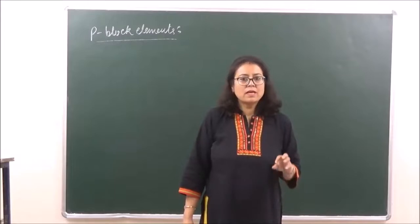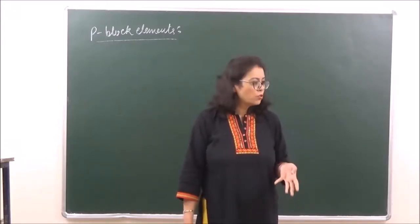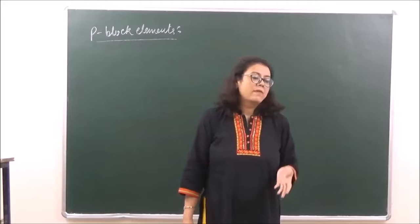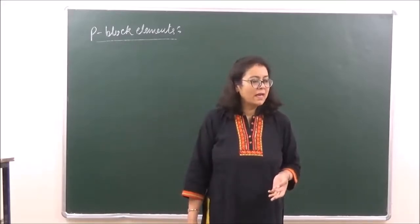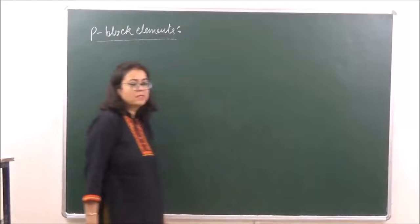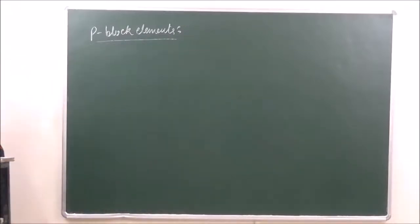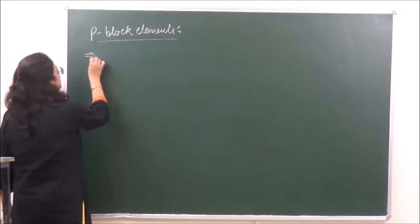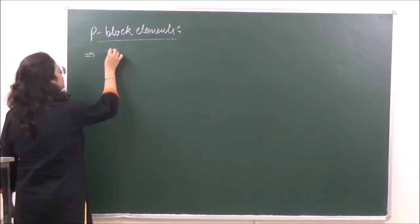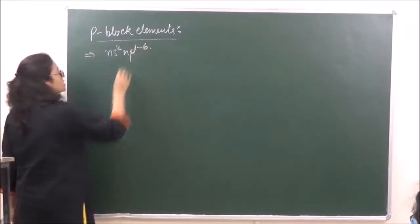Yesterday we covered the S block elements. The S block elements have only two groups and they are the alkali metals and the alkaline earth metals. Today we are going to do the characteristics of P block elements. In case of P block elements, the general electronic configuration is ns² np¹⁻⁶, where the subshell P is filled progressively.